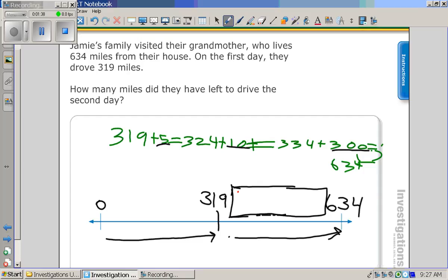Okay, so 300 plus 10 is? 310. Plus 5? 315. And there's your answer.